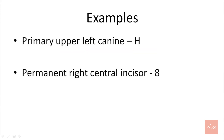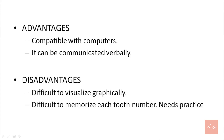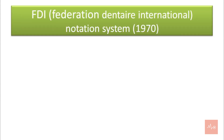Let's move on to examples. The primary upper left canine has a specific alphabet that is H, and the primary right central incisor has a specific number that is number 8. The advantages of this system: it's compatible with computers and it can be communicated verbally. Disadvantages: it's difficult to visualize graphically and it's difficult to memorize as each tooth has a different alphabet or number. This needs a lot of practice.